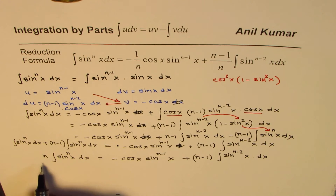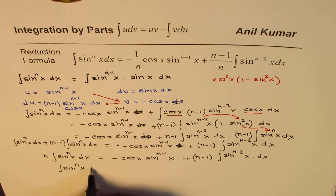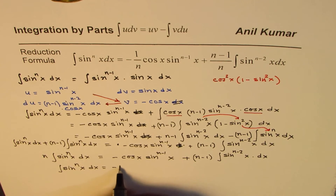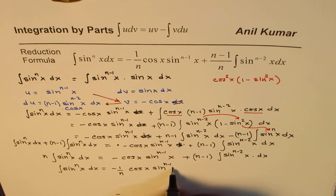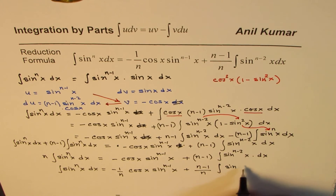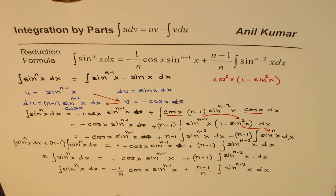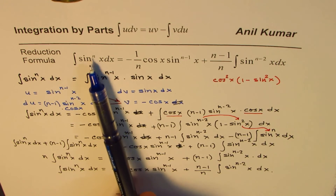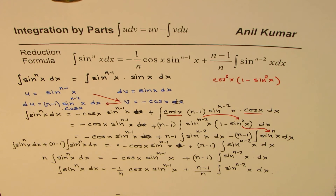Combining terms on the left gives n times the integral of sine to the power of nx dx. Now we can divide by n. So dividing by n, we get the integral of sine to the power of nx dx equals minus 1 over n times cos x times sine to the power of n minus 1 of x, plus n minus 1 over n times the integral of sine to the power of n minus 2 of x dx. That is how you prove this reduction formula.